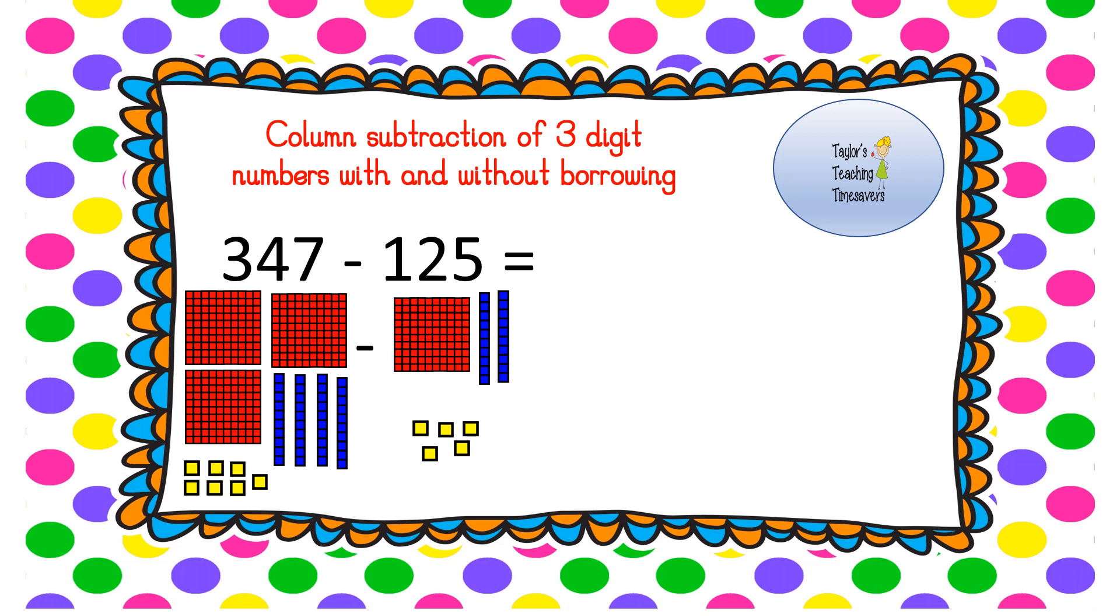So similar to how we would do two-digit numbers, we would still write out our question vertically in columns. So 347 take away, get that take away subtraction sign off to one side, take away 125. Let's put our equal signs.